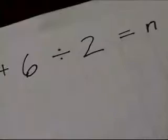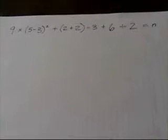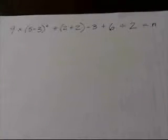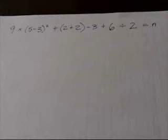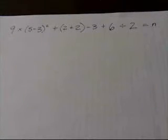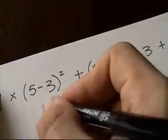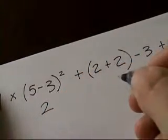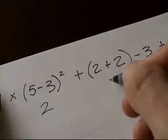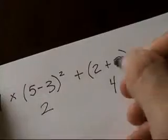Oh no, what are you going to do? Whoa there, calm down. It's not as bad as it looks. You just need to process it in the correct order to get the right answer. First, take a look at anything in parentheses. 5 minus 3 is 2. 2 plus 2 is 4.